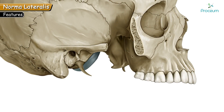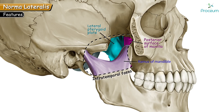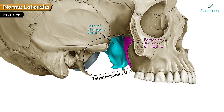Below the zygomatic arch, the fossa is named the infratemporal fossa. It is present below the temporal fossa, so it is called the infratemporal fossa — an irregular space below the zygomatic arch. Its boundaries are: anteriorly, the posterior surface of the maxilla; medially, the lateral pterygoid plate; laterally, the ramus of the mandible; and the roof is formed by the greater wing of the sphenoid bone.